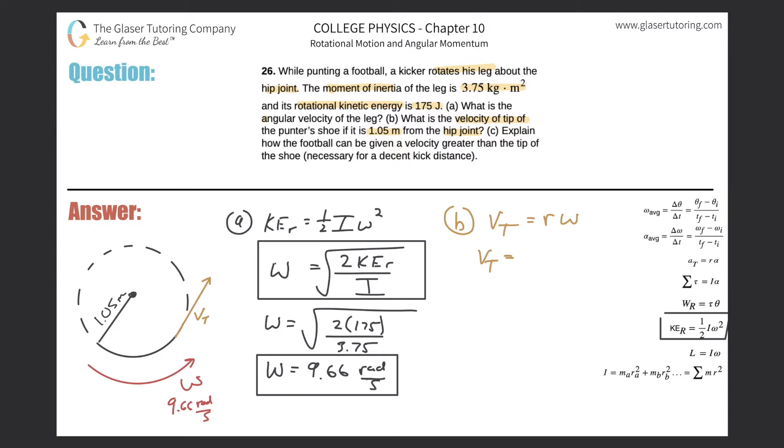All we have to do is plug in the radius of rotation, 1.05 as they mentioned, and the angular velocity we just found, which was 9.66. I'm going to use the more exact value here when I calculate. Just take the prior answer 9.66 and multiply it by 1.05 and we get 10.1, in terms of meters per second.